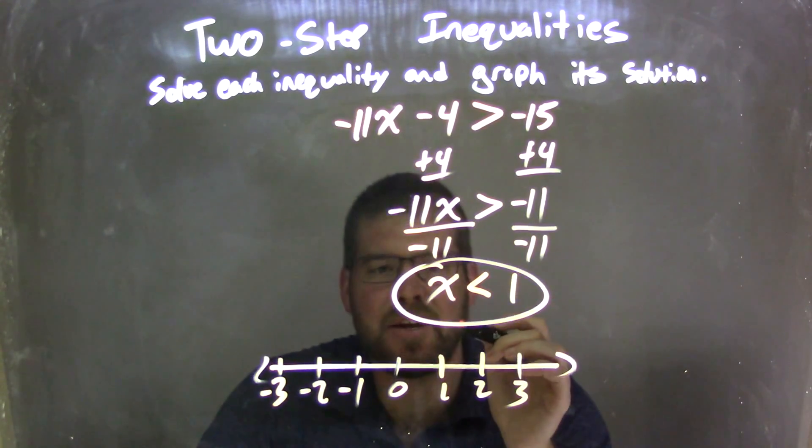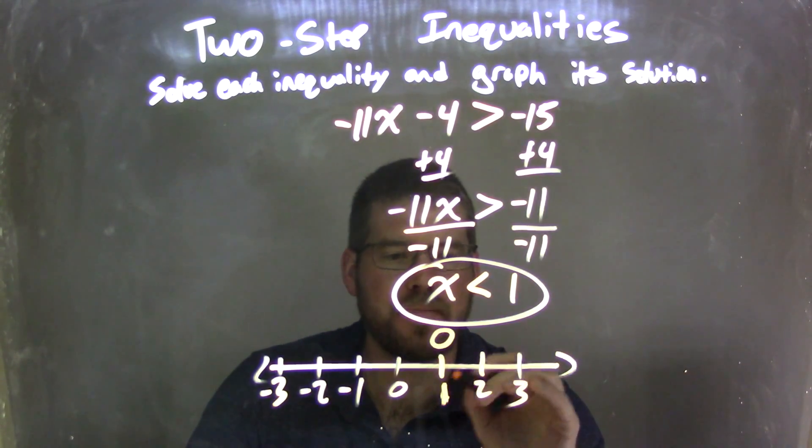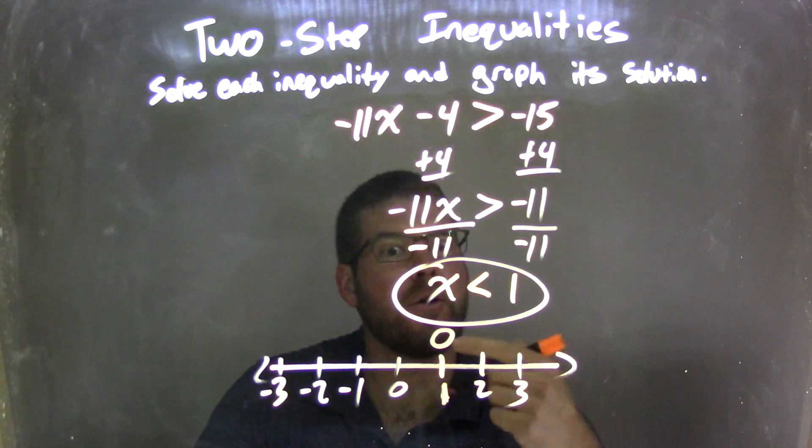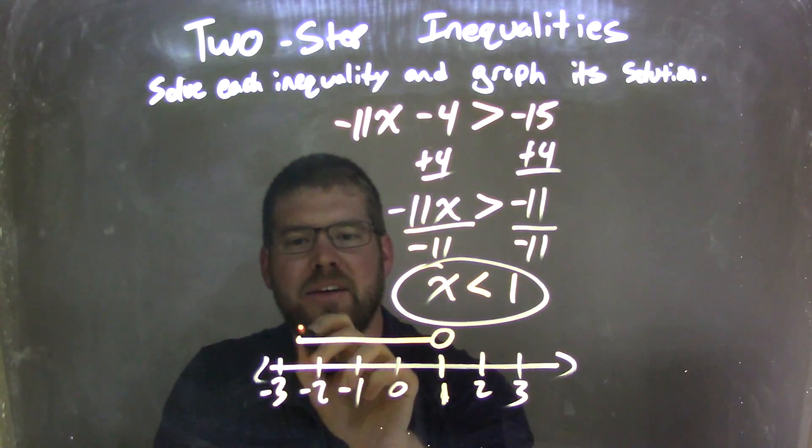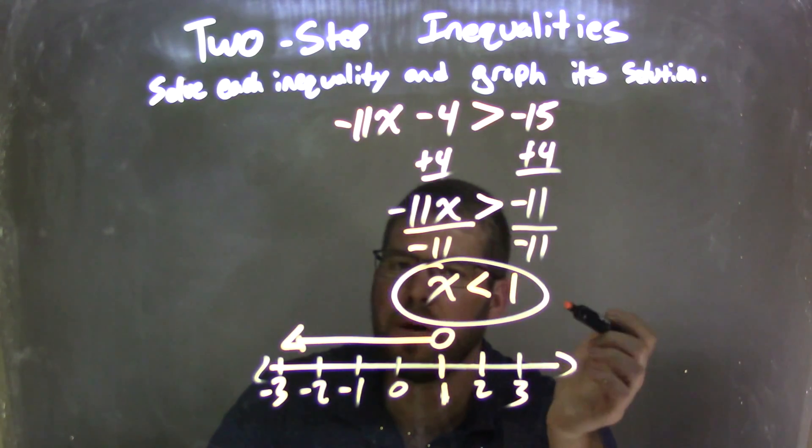So x is less than positive 1, so we have an open circle at 1 because it's not equal to, right? Not equal to, and our arrow goes to the left because x is less than that 1. And there we have it. We have a graph here that represents where x is less than 1.